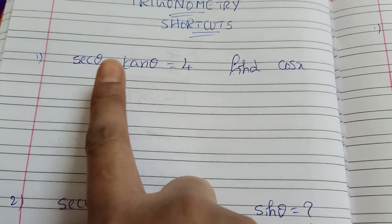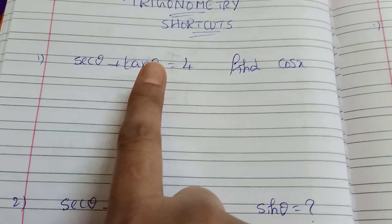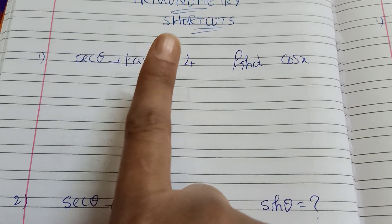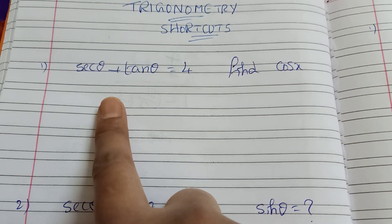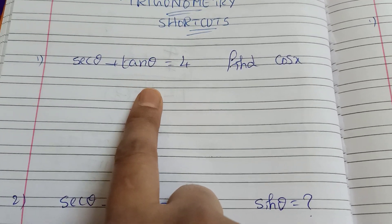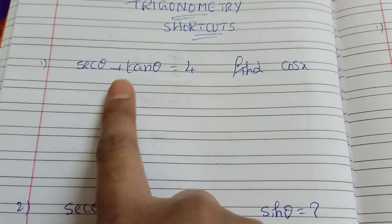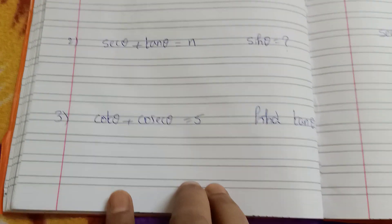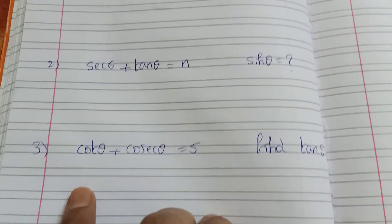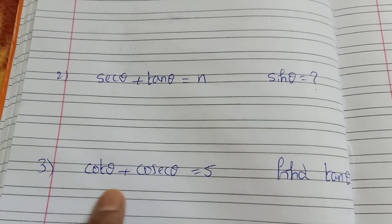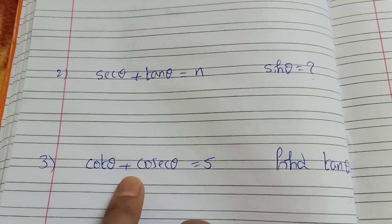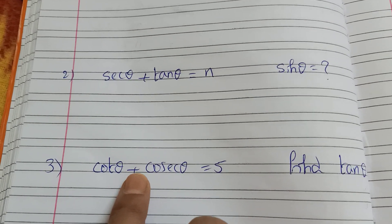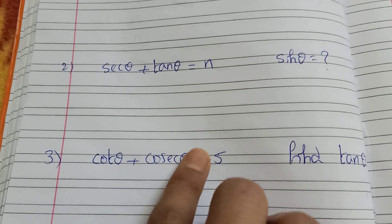Secant θ plus tan θ — the second identity: sec²θ minus tan²θ equals 1. The relationship is equal to 1. Next, cot θ plus cosecant θ — if you want to know the relationship, cot²θ equals 1.